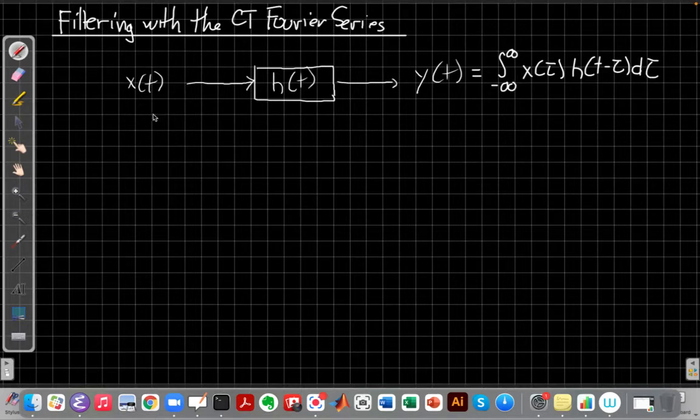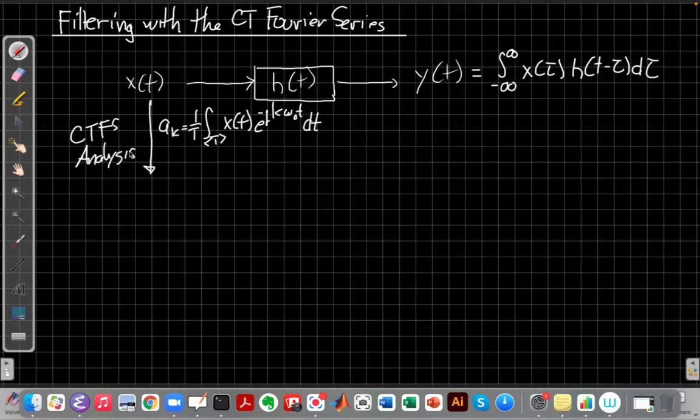So the first step is to find the Fourier series for x(t), which is to take Fourier, analyze x(t), that's why we call it the analysis equation, to write x(t) as a weighted sum of complex exponentials. So we saw last week that this is our analysis equation. We can use this for any periodic x(t), where we know capital T is the period.